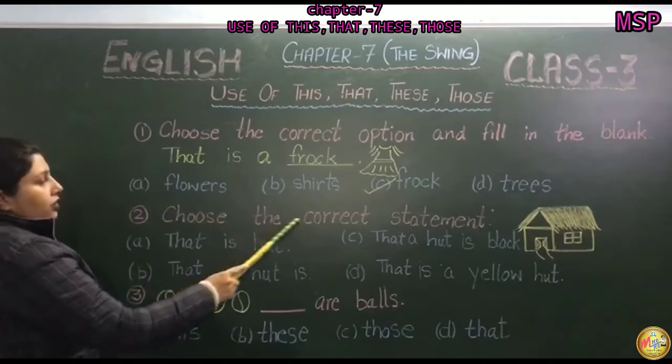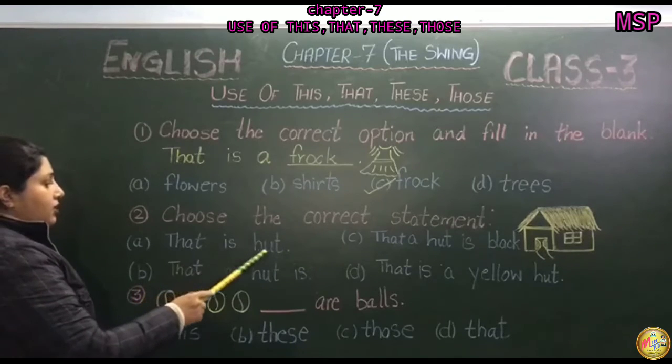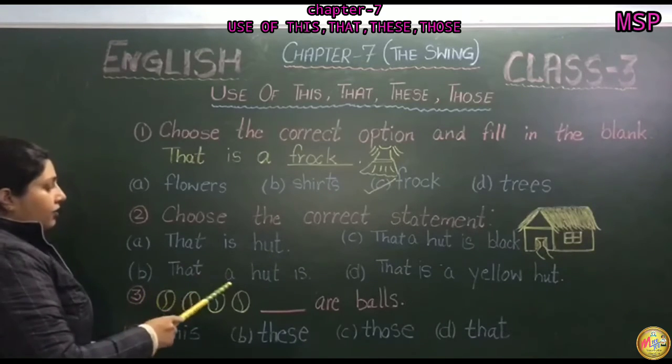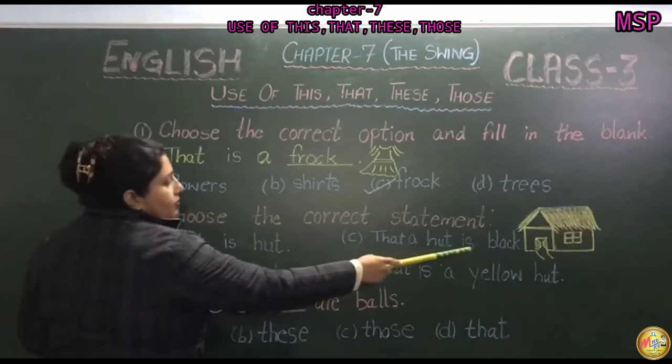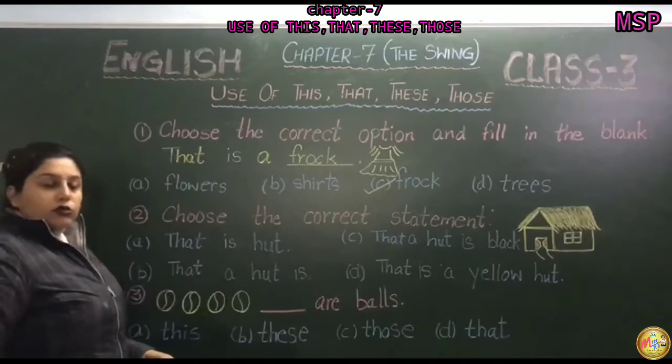Second portion, choose the correct statement. Options are that is, that a hut is, that is a yellow hut. Better piste dekh rahe ho.